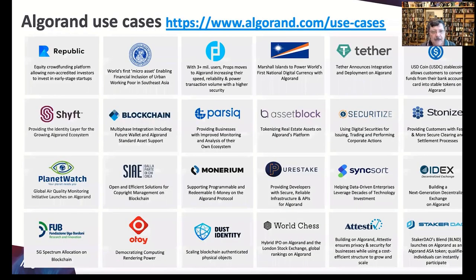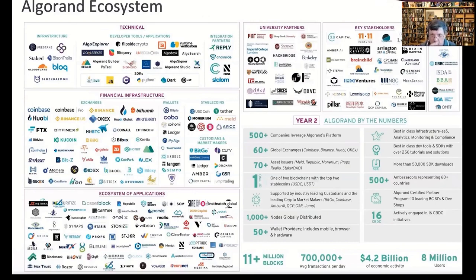Algorand DeFi examples include IDEX, Monerium, Polkadot, stable coins like Tether and USDC. More examples include World Chess, Planet Watch, Republic, and Tether. A lot of companies are now in the use case ecosystem, and it's growing leaps and bounds. I remember when I started at Microsoft back in '97 — the feeling was like that: everyone in the company and community was excited and getting ramped up.